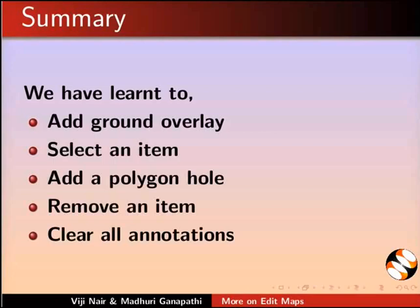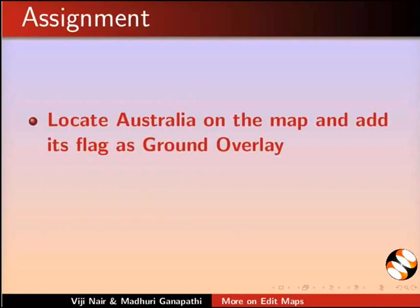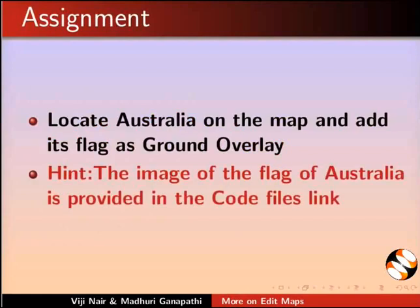Let us summarize. In this tutorial we have learnt to add ground overlay, select an item, add a polygon hole, remove an item, and clear all annotations. An assignment for you: locate Australia on the map and add its flag as ground overlay. Hint: the image of the flag of Australia is provided in the code files link.